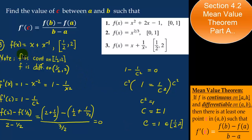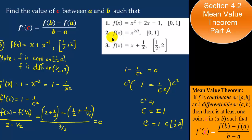For number 3, f of x equals x plus 1 over x. In the first two problems, the functions were polynomials — differentiable and continuous on the interval — so they satisfied the mean value theorem. For number 3, we have a ratio, so we must be careful. With the interval from 1 half to 2, f is continuous there because the discontinuity occurs at x equal to 0, which is not in this interval. The function is differentiable on the open interval 1 half to 2.